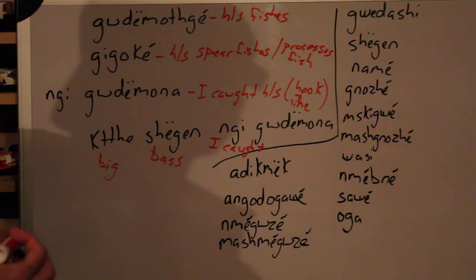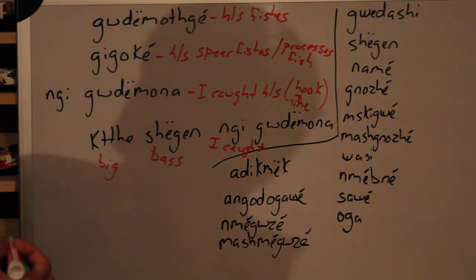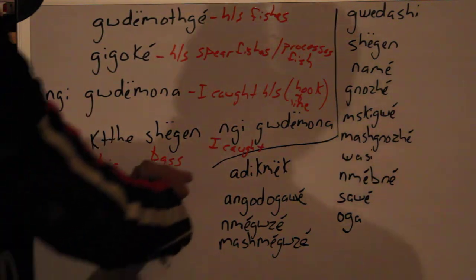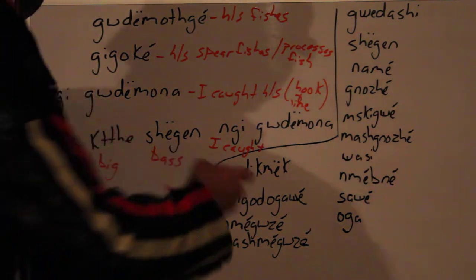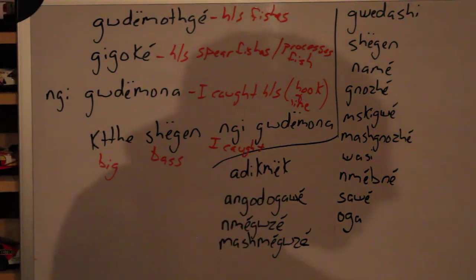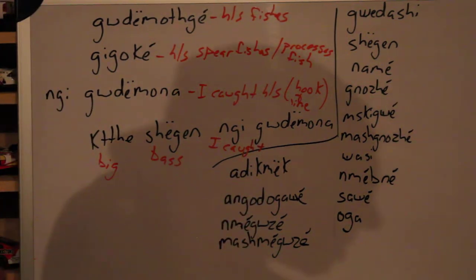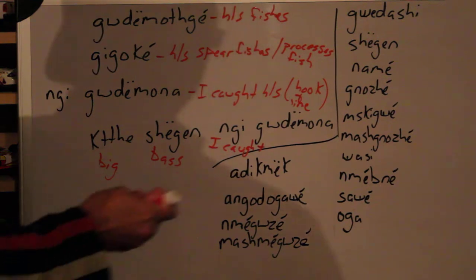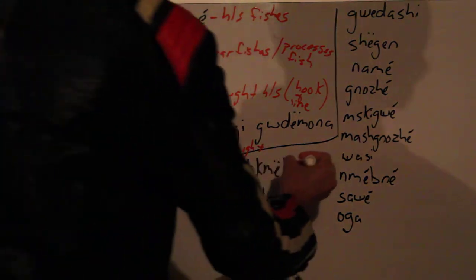Now some fish types that you might see in this area. First one we have here is adikmuk. Go out to Lake Michigan, you go fishing, you may catch adikmuk. Adikmuk is a white fish.